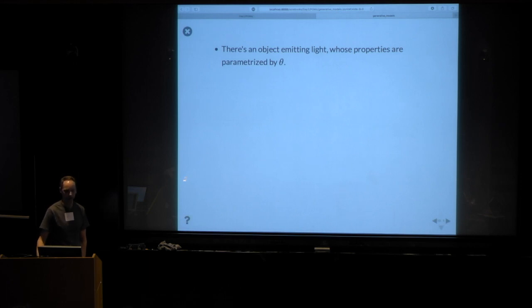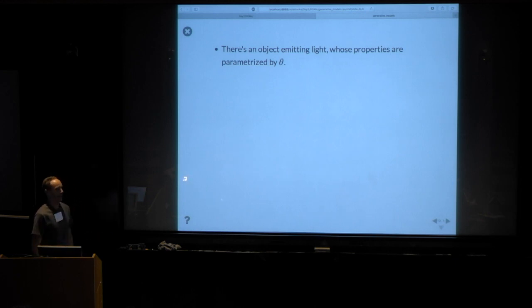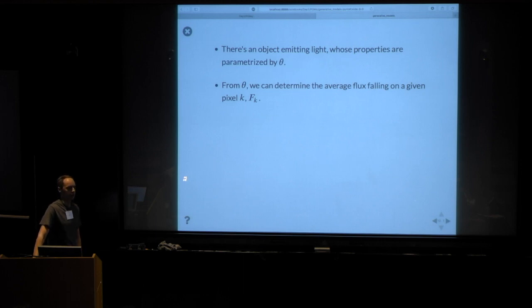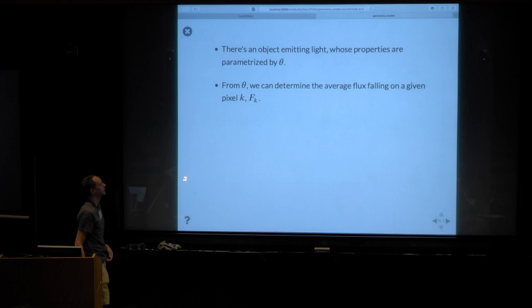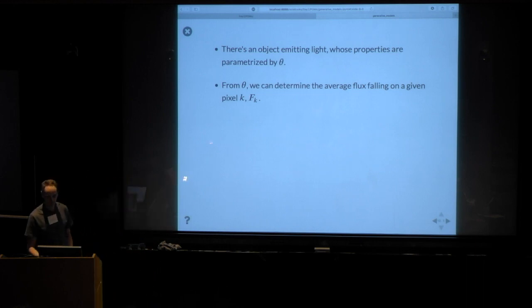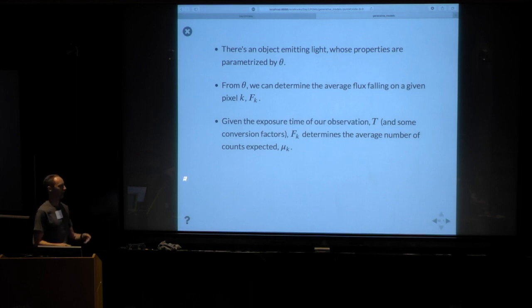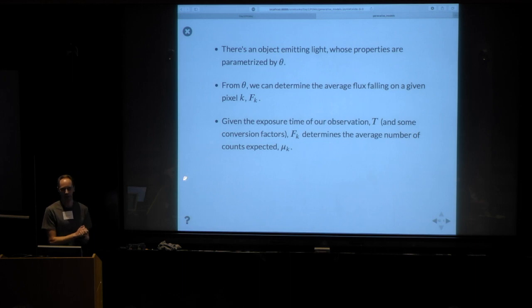Here's how this dataset came to be, in enough detail. There's an object out there with a model parameterized by theta. From theta, invoking physics, we can make a prediction for the average flux received at Earth as a function of position on the sky for each pixel k. Given the exposure time, collecting area, and efficiency — constants — we turn that average flux into an average number of counts expected per pixel. And every time I say 'determined,' there's an equal sign in my brain — no additional random variance in those steps.